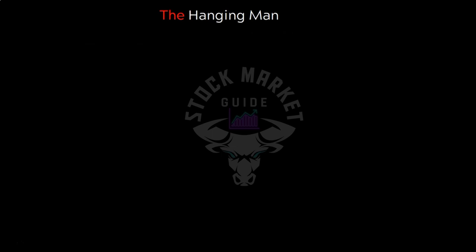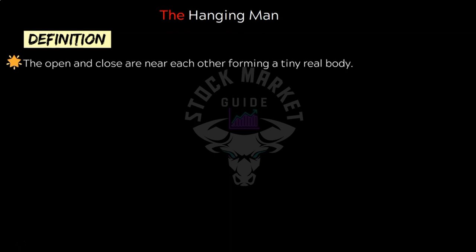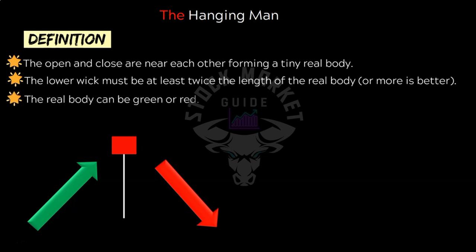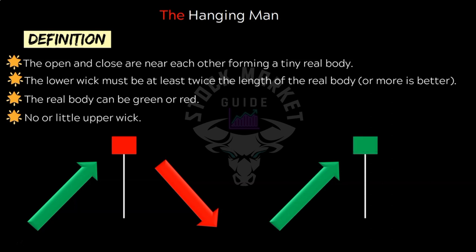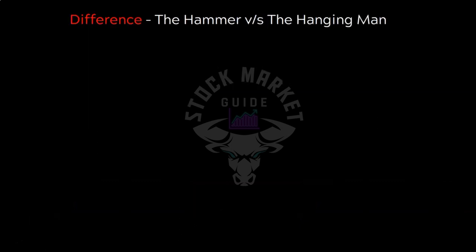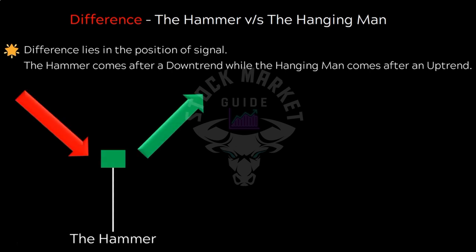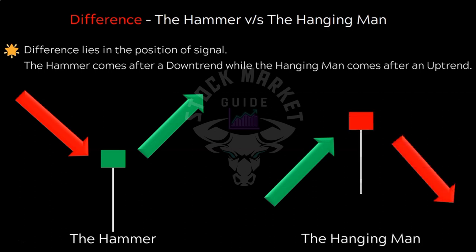Now let's move on to the hanging man pattern. In the case of the hanging man, the open and close are closer to each other with a long lower wick which is twice the length of the real body — more the better. The hanging man pattern generally has no or negligible upper wick. Since this is a bearish reversal pattern, it must form in an uptrend. The color of the body has least importance. The key question most new traders ask is: what's the difference between hammer and hanging man since they look similar? The formation is the same, but the difference lies in the position of the signal — the hammer comes after a downtrend while the hanging man comes after an uptrend.